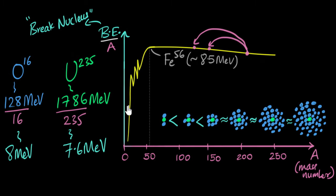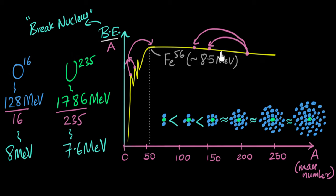So what happens to lighter elements? Lighter elements undergo fusion — they fuse together to form heavier elements, because the heavier product is more stable than the lighter reactants. That's what powers our sun and other stars: nuclear fusion. Hydrogen is combined to form helium, and later helium can be combined to form even heavier elements. And now you can look at the graph and explain yourself why heavier elements don't undergo fusion.